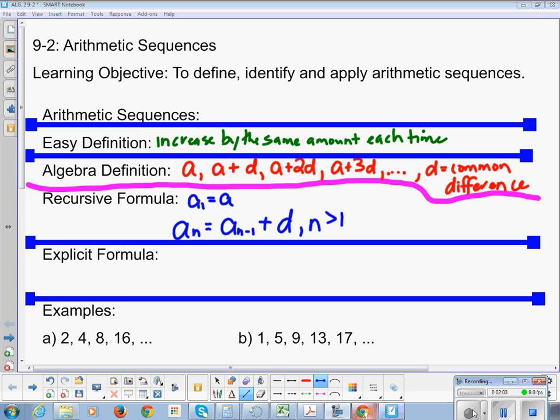So our explicit formula is the first term plus N minus 1 in parentheses times the common difference.